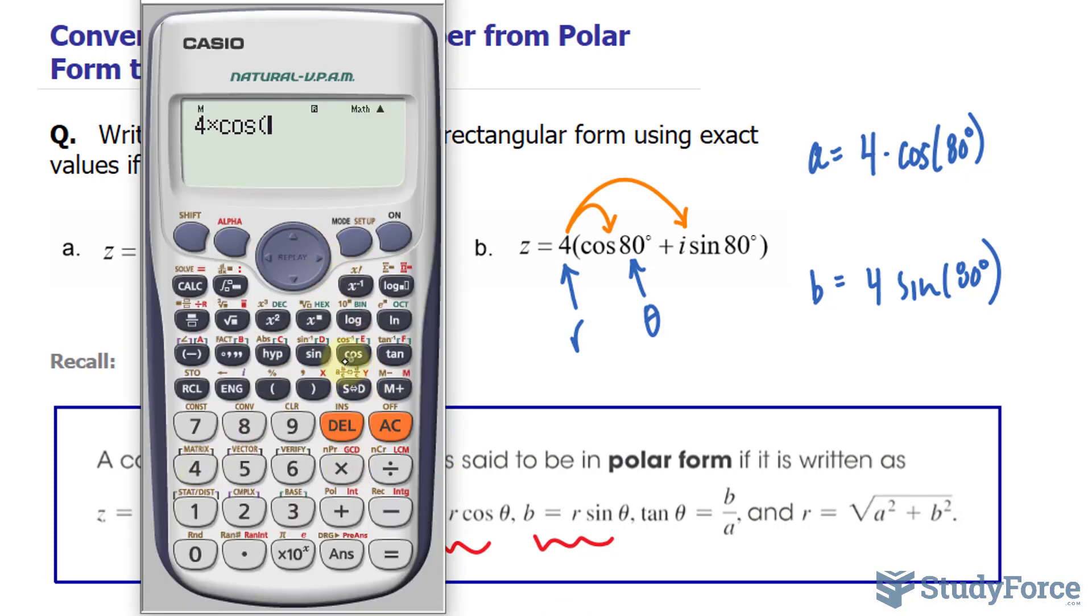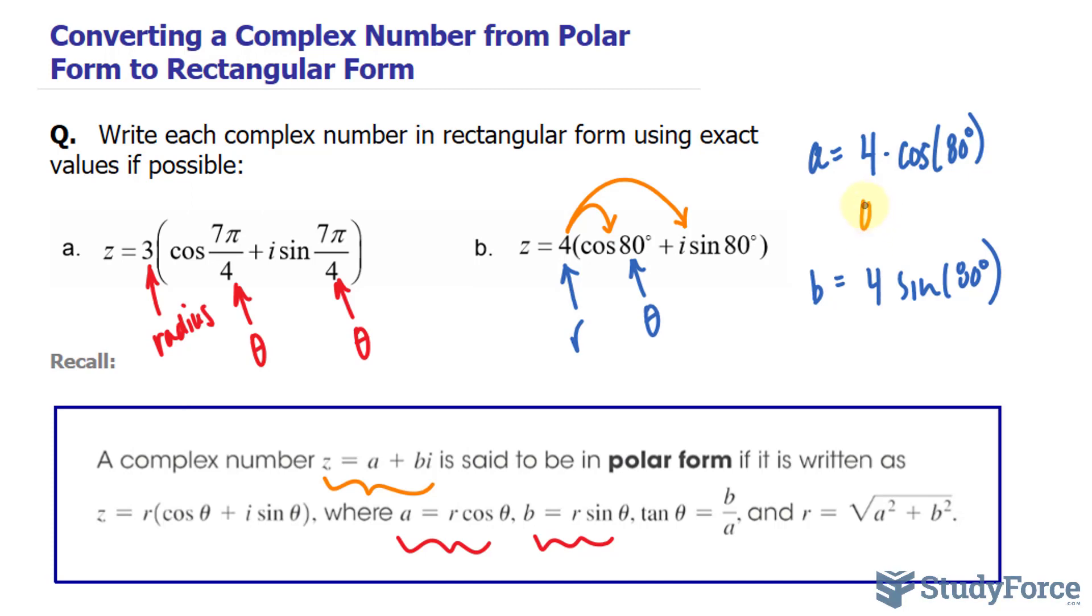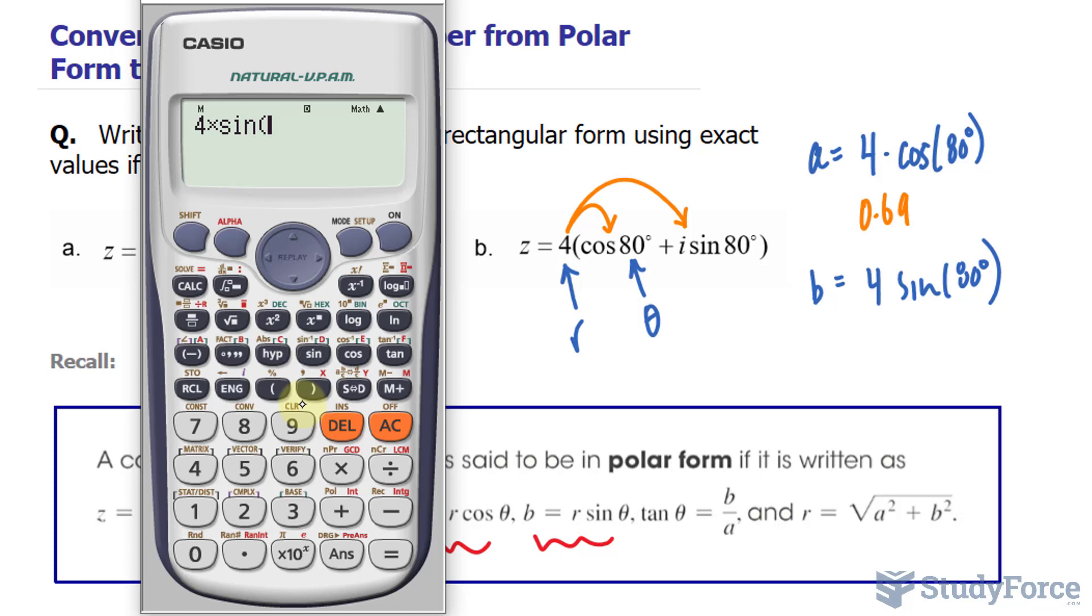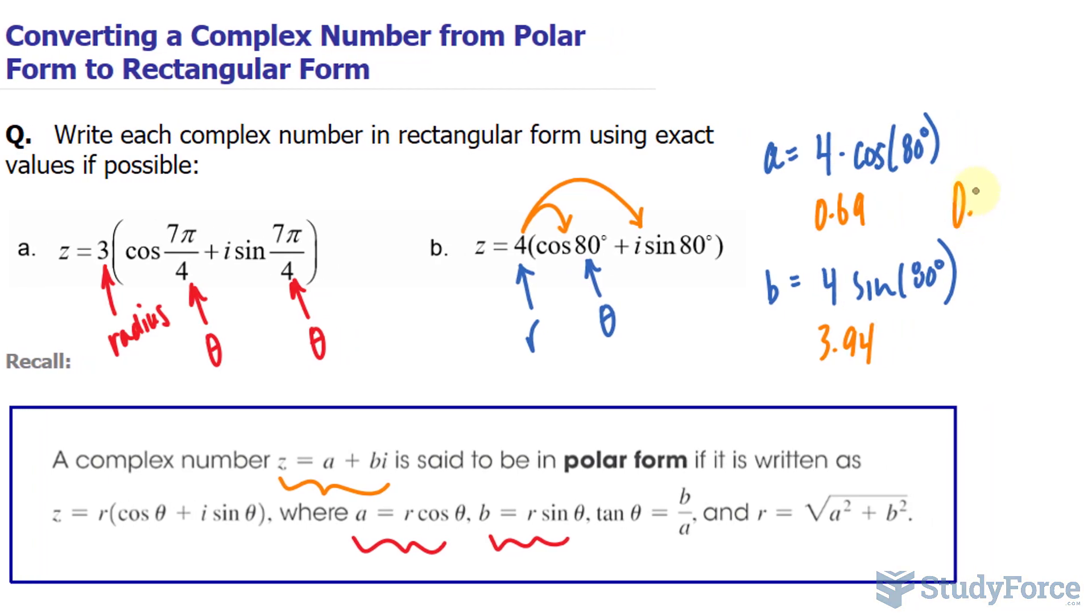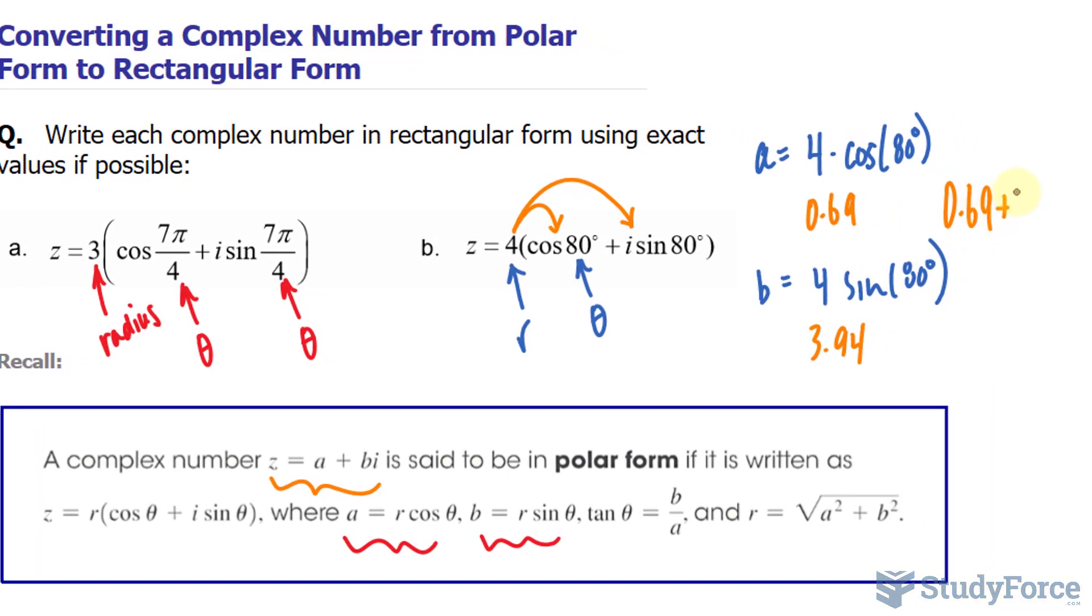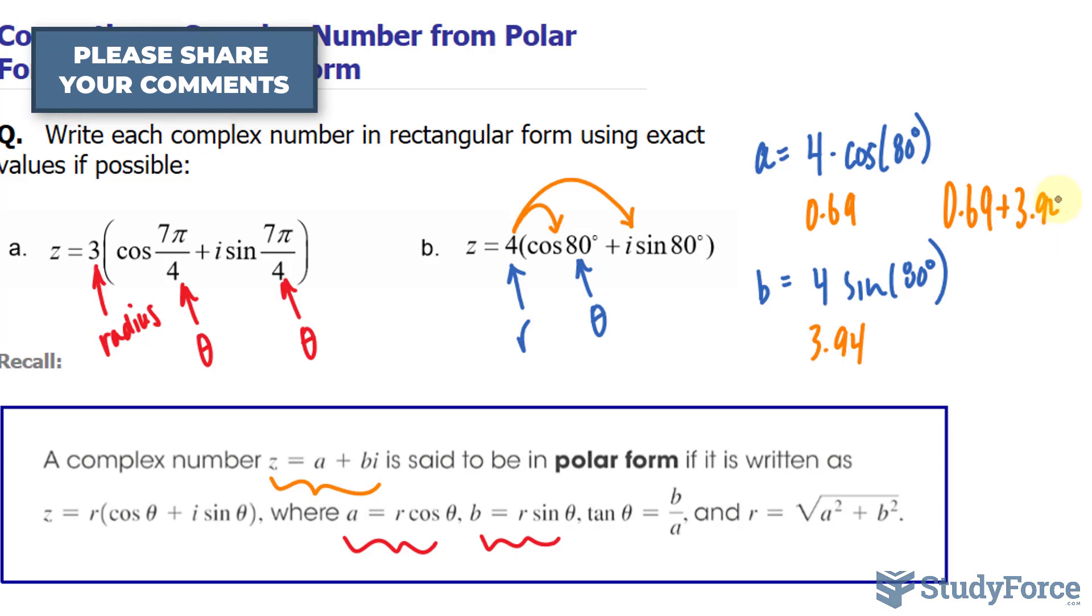4 times cosine. I'll convert my calculator from radians to degrees because I need to here. 80. That gives me 0.6945. We can simply round to two numbers after the decimal place. So I'll write down 0.69, and let's do the same thing again, but with sine of 80, and we get 3.93, or 3.94. We write this down as 0.69 plus 3.94i.